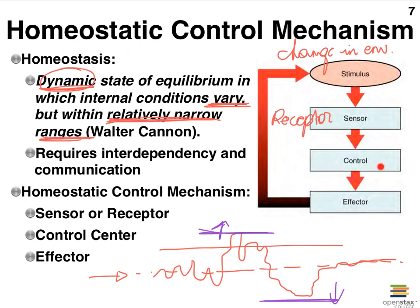These receptors are responsible for picking up changes in the environment. They're going to relay that information to what we refer to as our control center. Very often the control center is going to be our central nervous system — the CNS, which includes the brain and the spinal cord. But not always. It can also be part of the endocrine system, a major gland. The control system receives the information from the receptors, interprets that information, makes sense out of it, and then sends out commands to the effectors.